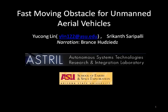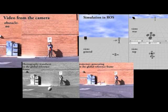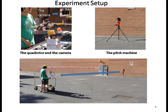In this video, we demonstrate fast-moving obstacle detection and avoidance for unmanned aerial vehicles. Sensing and avoiding moving objects is essential to autonomous flight. Our experimental setup consists of a quadrotor platform equipped with a forward-facing monocular camera. The UAV platform is held manually in position to emulate a hover.